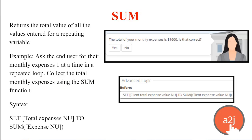Sum lets you return the total value of all the values entered for a repeating variable. So if you're asking the end user to list their expenses and you're storing that in a repeat loop in a variable called 'client expense value nu', you can then set a new value 'client total expense value nu' to the sum of that repeating variable. They tell you their expenses one at a time, and you can use A2J and the sum function to add up all those individual values into a new total and then display it to them to confirm.